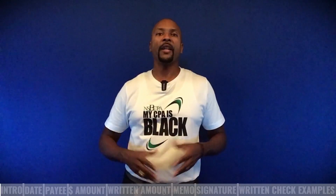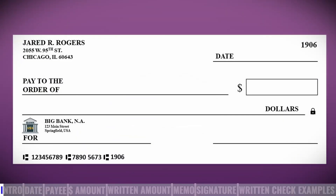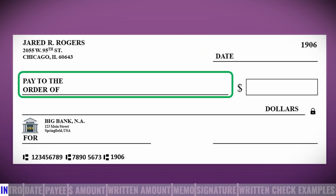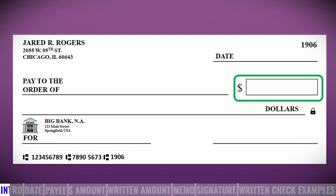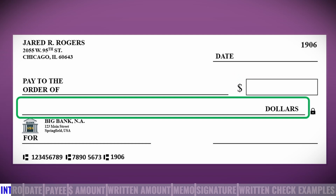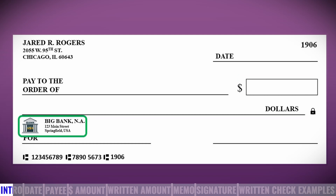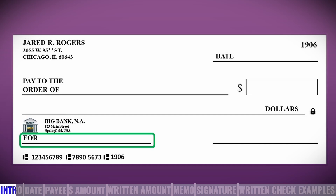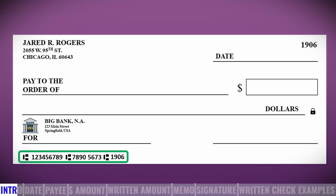Before we get deep into how to write a check, if you've never written one, we should start with some basics. In the upper left is your name and mailing address. In the upper right is the date the check was written, as well as the check number — for example, check 1906. Next, we have who the check is being paid to, and immediately to the right of the payee is the amount in numerical format, followed by a line with the amount written in expanded form. Below this is the name of your bank, followed by the memo line so you can record what the check is for. On the bottom right is where you sign, and in the lower left are the nine-digit bank routing number, your account number, and sometimes the check number.